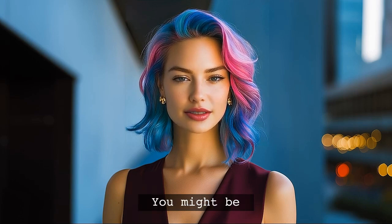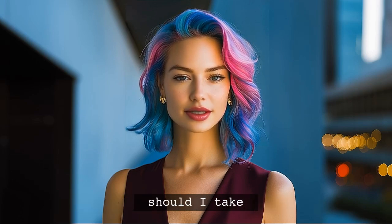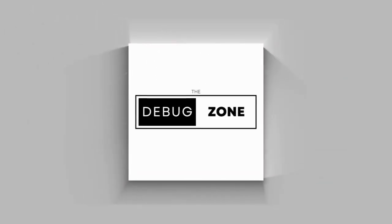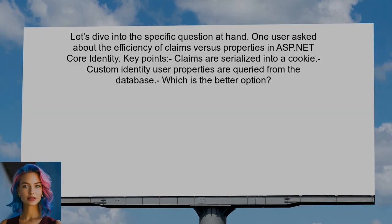You might be wondering, which approach should I take for my application? This is a common dilemma for many developers. One user asked about the efficiency of claims versus properties in ASP.NET Core Identity. They pointed out that claims are serialized into a cookie, which can lead to larger data transfers if a user has many claims.